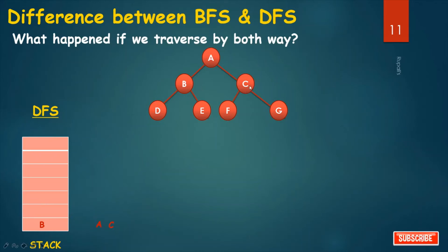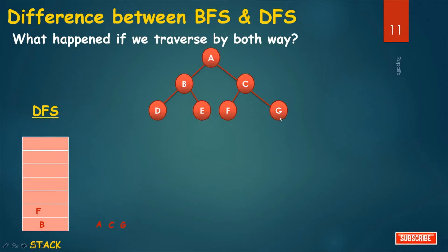Check the connected nodes with C — it is A, F, and G. A has status 3. F and G both have status 1, so push F and G. Pop G and print G. Check the connected nodes: only C, which is in status 3. Pop F and print F. Check connected nodes: only C, which is in status 3.